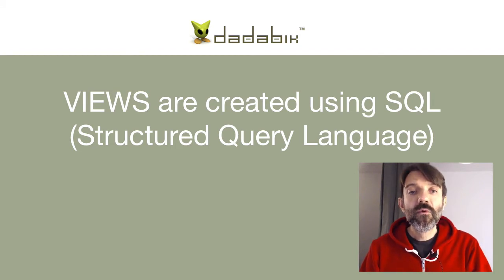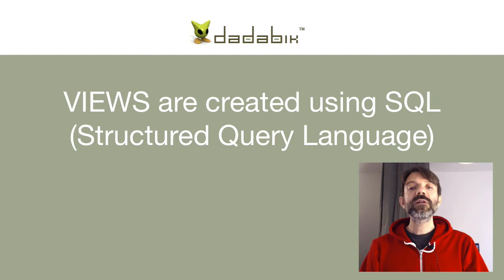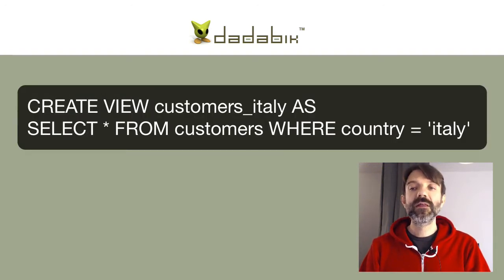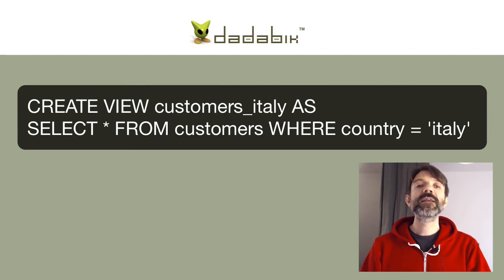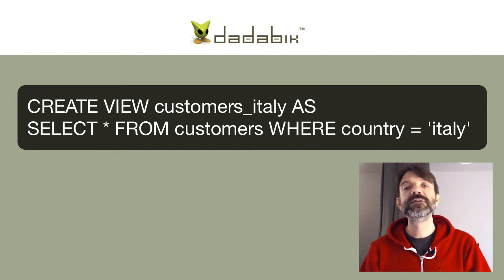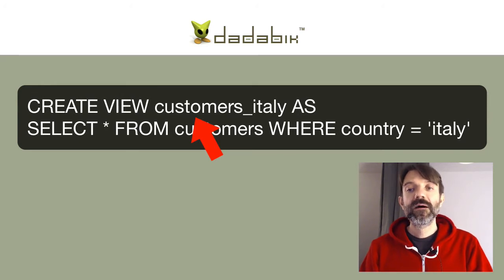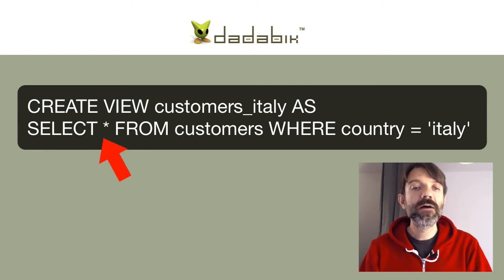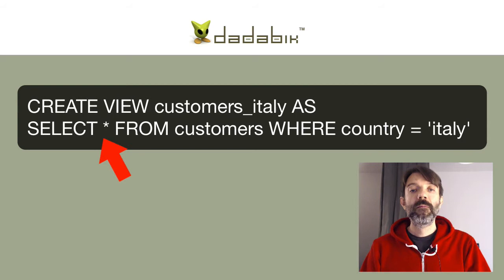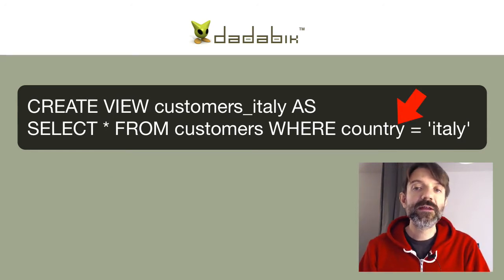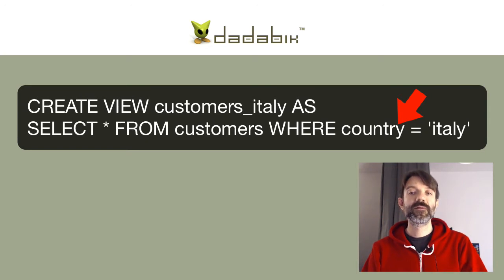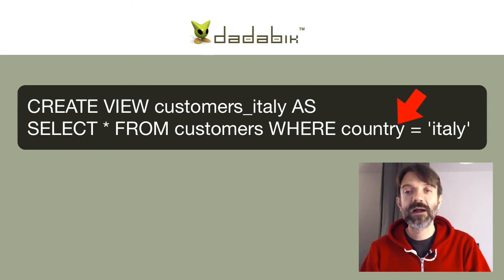So if you want to create a view containing only your Italian customers, you should execute this SQL query: CREATE VIEW customers_italy AS SELECT * FROM customers WHERE country = 'Italy'. So 'customers_italy' is the name of the view. SELECT * means select all the columns from the table 'customers', but only for the rows where the field 'country' equals 'Italy'.